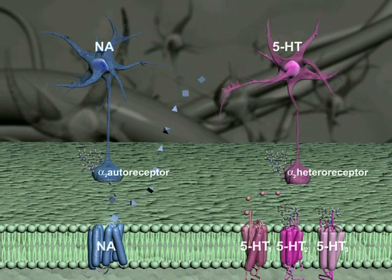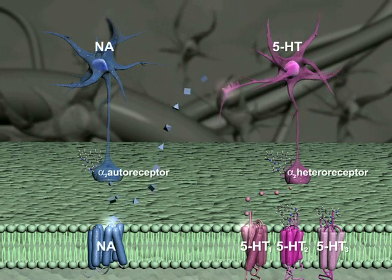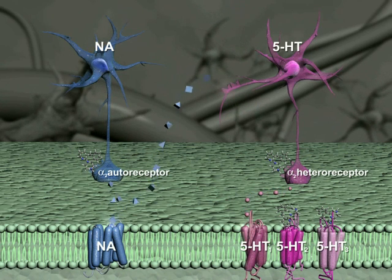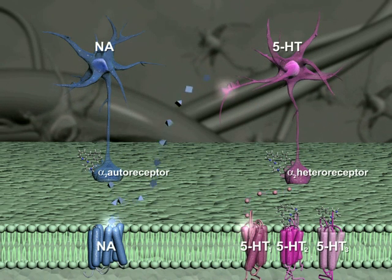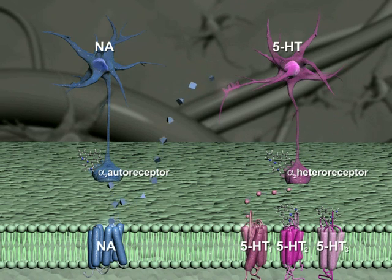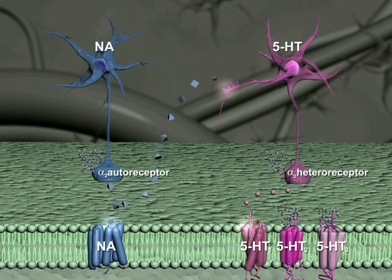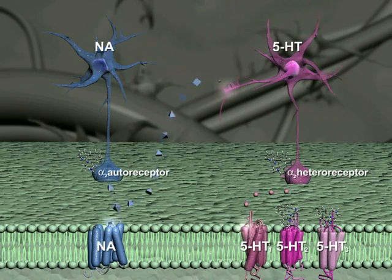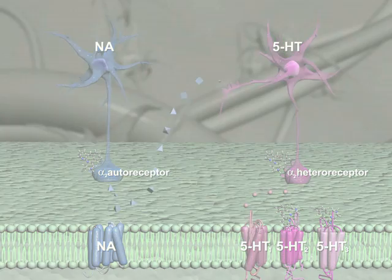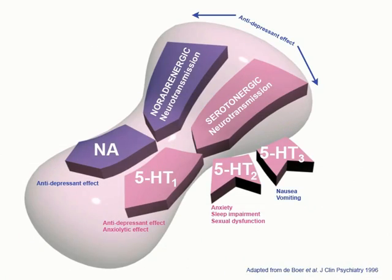Alpha-2, 5-HT2, and 5-HT3 antagonistic effects all contribute to the antidepressant profile of mirtazapine. Mirtazapine is accordingly classified as a noradrenergic and specific serotonergic antidepressant (NaSSA). Avanza SolTab effects stimulation of receptor subtypes.